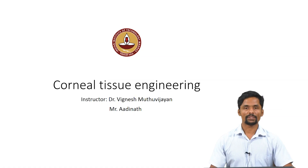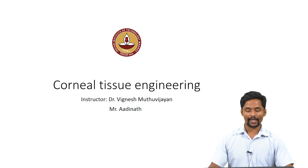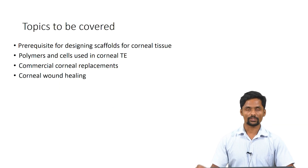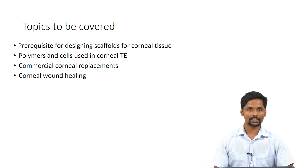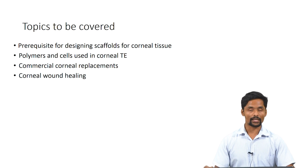Hello everyone. In the previous session we learnt about anatomy and other basic aspects of corneal tissue. In today's session we will talk about tissue engineering aspects of cornea. The topics covered will be prerequisites for designing scaffolds for corneal tissue, polymers and cells that have been used in corneal tissue engineering, and commercially available corneal replacements.